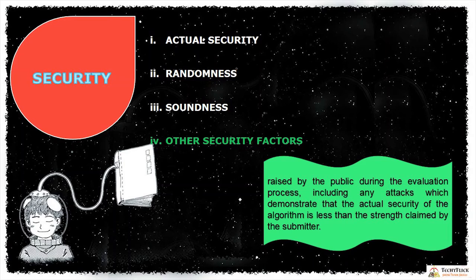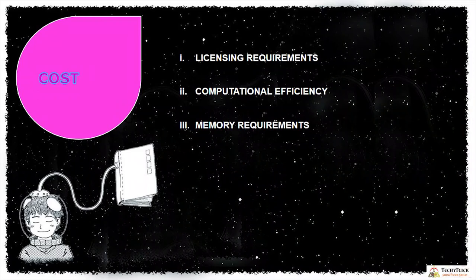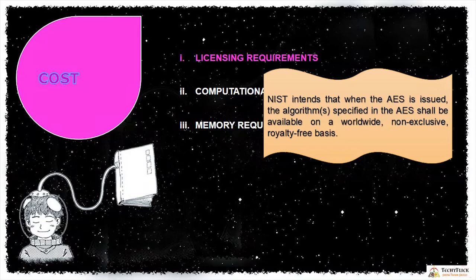The second criteria is cost, which includes licensing requirements, computational efficiency, and memory requirements. Regarding licensing: NIST intends that when AES is issued, the algorithm specified in the AES shall be available on a worldwide, non-exclusive, royalty-free basis.